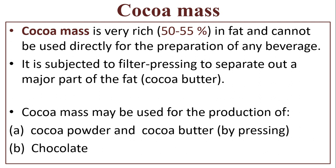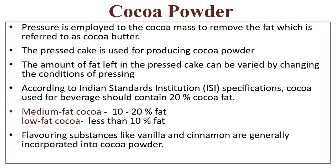Cocoa mass is very rich in fat — it consists of 50 to 55% fat — and cannot be used directly for the preparation of any beverage. It is subjected to filter pressing to separate out a major part of the fat. This fat is known as cocoa butter. Cocoa mass may be used for the production of cocoa powder and cocoa butter by pressing, and also for chocolate.